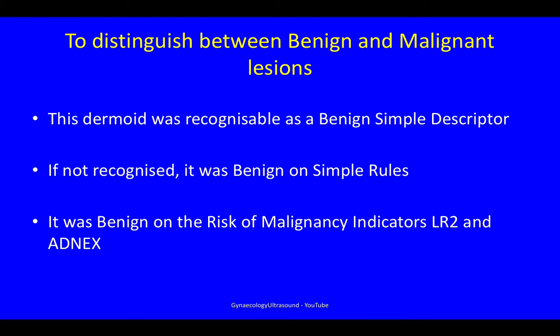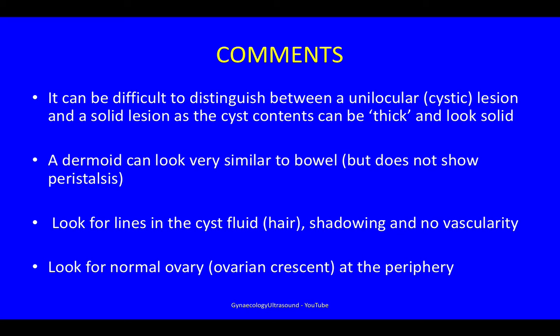It's important to be able to distinguish between benign and malignant adnexal lesions. This dermoid was recognisable as benign using a simple descriptor. If it was not recognised immediately, it was benign on simple rules, and equally benign on the risk of malignancy indicators LR2 and ADNEX. It can be very difficult to distinguish between a unilocular cystic lesion and a solid lesion, as the cyst contents in a dermoid can be very thick and look solid. A dermoid can look very similar to bowel but doesn't show peristalsis.